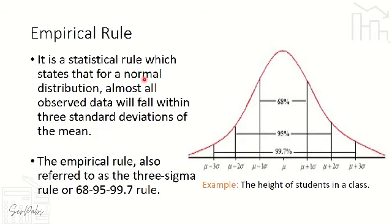Now we'll have the empirical rule. In the empirical rule, our probability will be converted with 0 as our mean — the mean will be represented by 0. We'll discuss how to convert on our next lesson. The empirical rule is a statistical rule which states that for a normal distribution, almost all observed data will fall within 3 standard deviations of the mean. It is also known as the 3-sigma rule — sigma being the symbol for standard deviation.